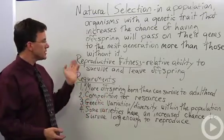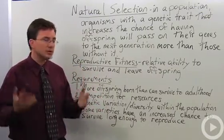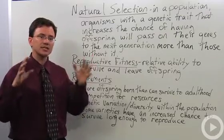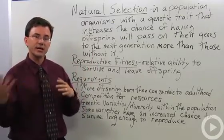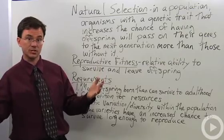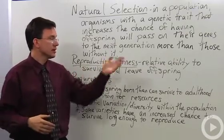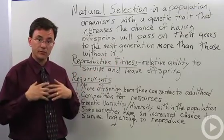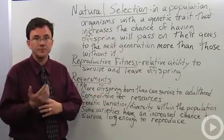This leads into a discussion of something called reproductive fitness. Reproductive fitness is how scientists measure an organism's relative ability compared to the other organisms in that population — their relative ability to survive and leave offspring in the next generation.